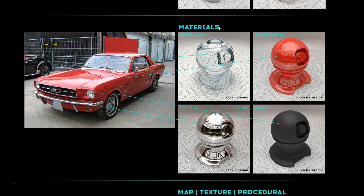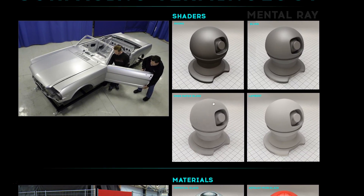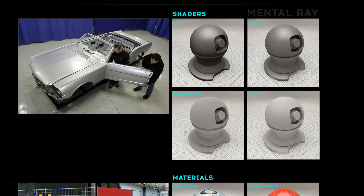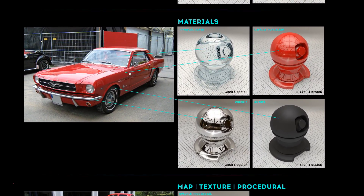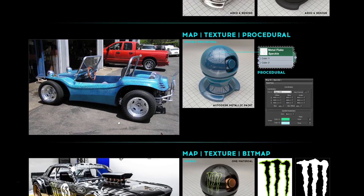For the most part, material and shader are used synonymously because they're typically locked together — you pull a shader or material out of your library and it has the shader and controls combined. But there is a distinct difference: the shader itself is purely the algorithm that everything is built on, the underlying structure. The material is what we layer on top to control the different attributes.